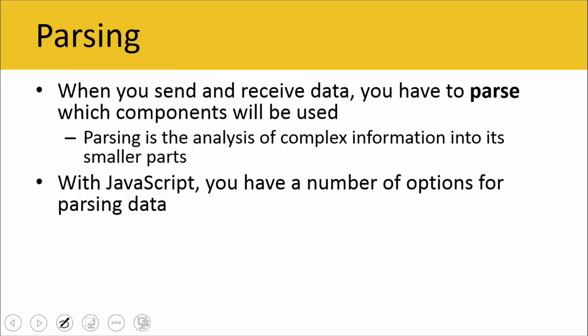When we do receive data back from a server, we have to parse which components are going to be used. We send all kinds of complex information back and forth. Parsing is the ability to analyze that complex information and break it down into its smaller parts. With JavaScript, you have a number of options for parsing data so that we can get usernames, access photos associated with those usernames, phone numbers, addresses — all that good stuff that we use the web for, like getting directions.